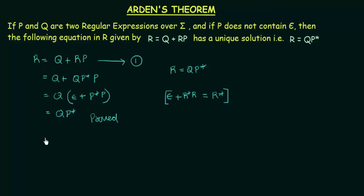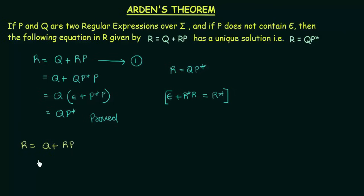We have just proved that r = qp* is a solution to this equation — that is the first part of Arden's Theorem. Now let's prove the second part: that this is a unique solution, meaning this is the only solution. To do that, let me take the equation r = q + rp again, and replace r on the right-hand side with q + rp itself.